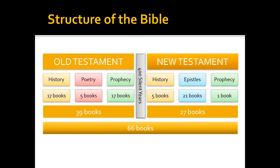There are 39 books in the Old Testament, 27 books in the New Testament, for a total of 66 books. But between the Old and the New Testament, we have what we've called 400 silent years. This is what we want to focus on — sometimes it's referred to as the intertestamental period.